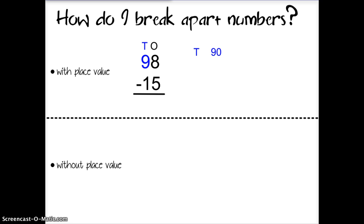Nine tens is 90. Minus one ten, ten equals 80. Next I have eight ones minus five ones equals three. And I'll add up those two differences. 80 plus three equals 83.